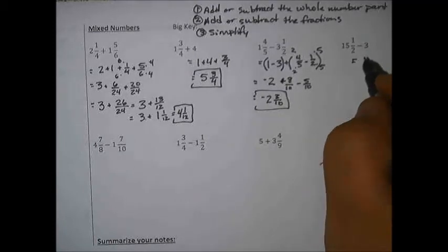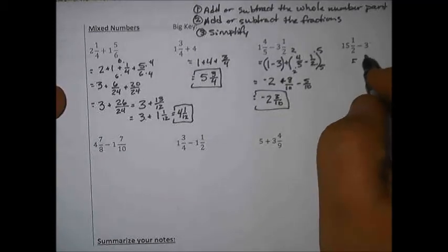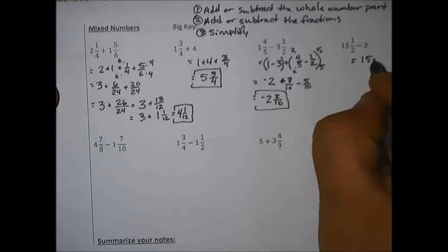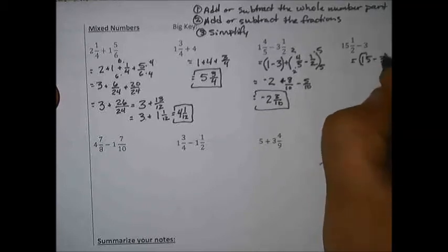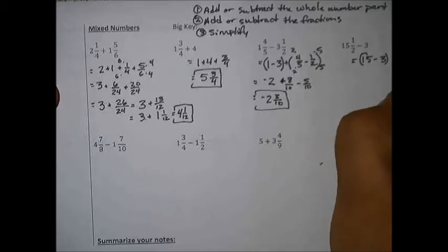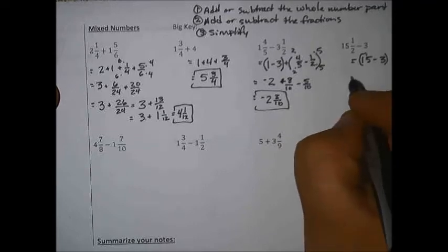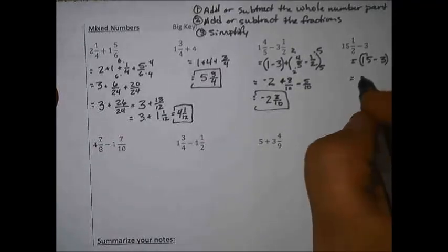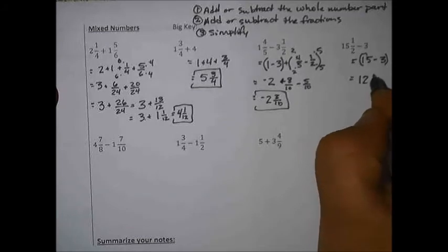Last one on this section: 15 and 1/2 minus 3. Subtract the whole number parts — 15 minus 3 is 12 — and bring along the 1/2. The answer is 12 and 1/2.